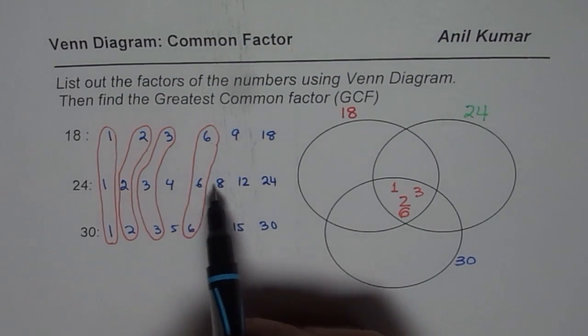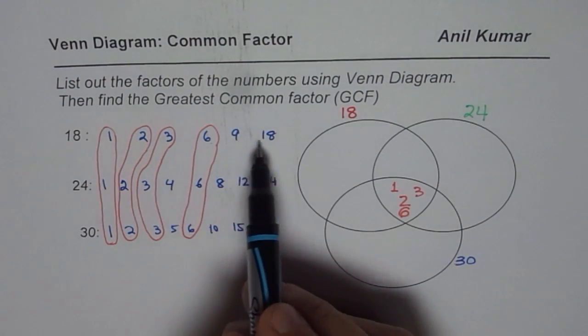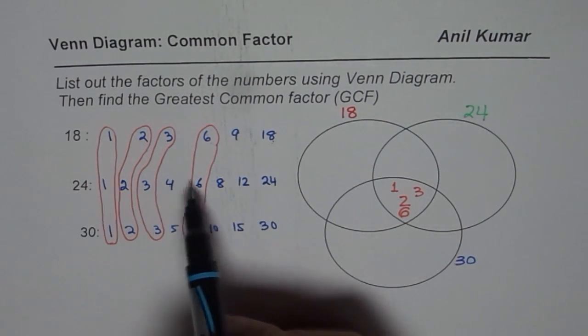So what we find is that nothing is common. We are left with 9 and 18 which are not common to 24.